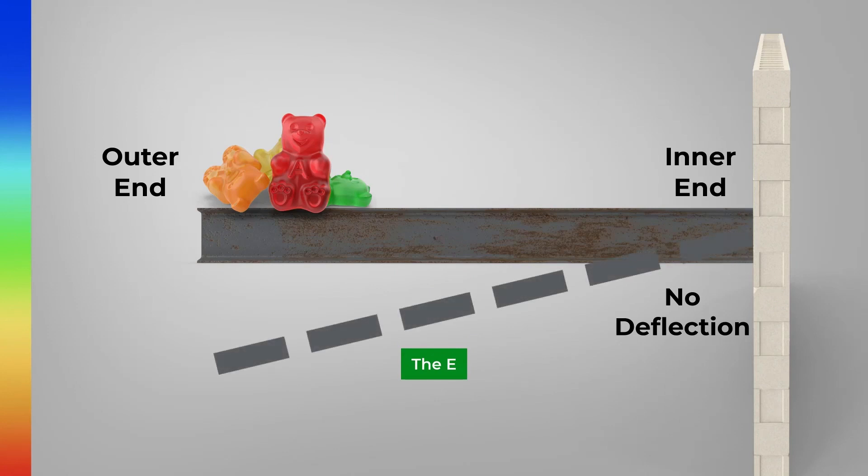Now, the question is, what if we want to know the deflection in the middle of the beam? Well, that's simple. For example, we can split the beam into two and redo the whole calculation.